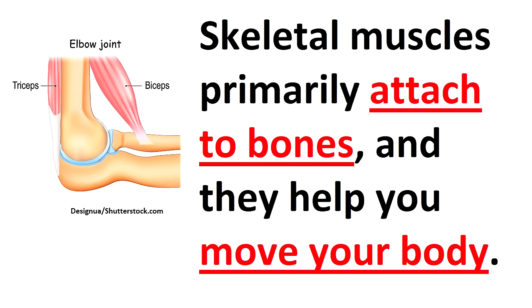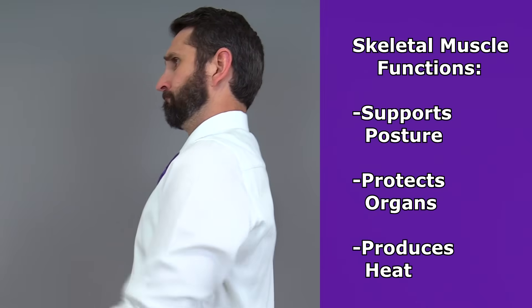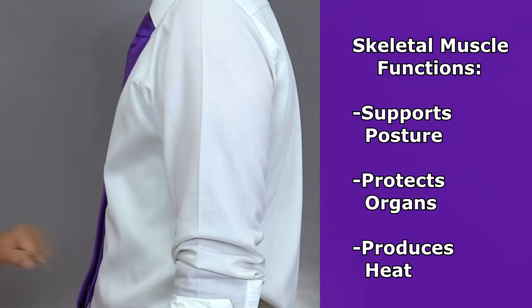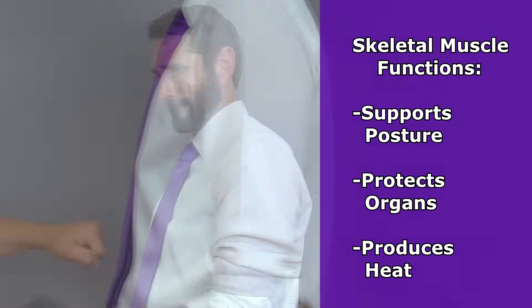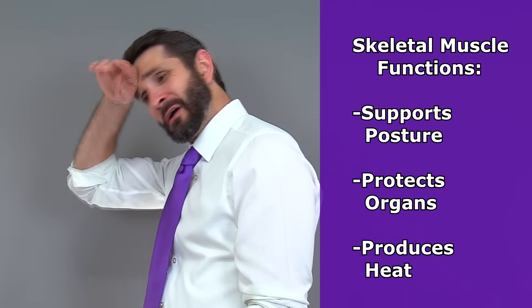Skeletal muscles most commonly attach to bones and they help you move your body. Unlike the other two types of muscle tissue, skeletal muscles contract on a voluntary basis via the somatic nervous system, allowing you to move your body at will. Skeletal muscles also serve important functions such as supporting your posture, protecting delicate organs, and they even produce heat during contraction, which helps the body maintain a proper temperature.